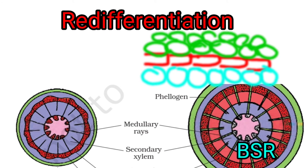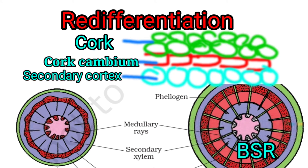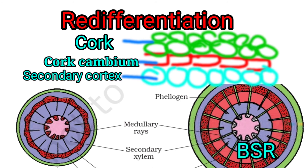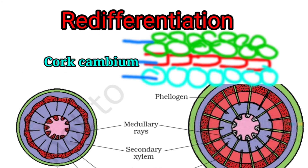Re-differentiation. During extra-stelar secondary growth, the meristematic tissue called cork cambium produces cells towards the outside and inner side. These permanent cells are called cork and secondary cortex. So this formation of cork and secondary cortex is called re-differentiation.